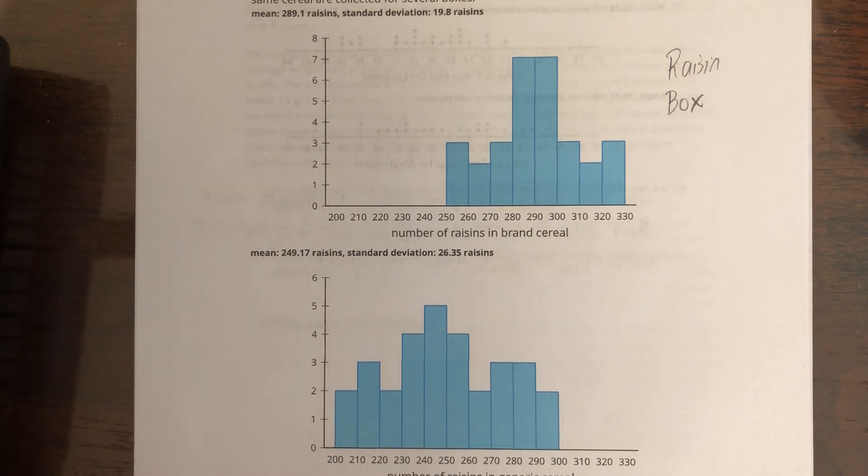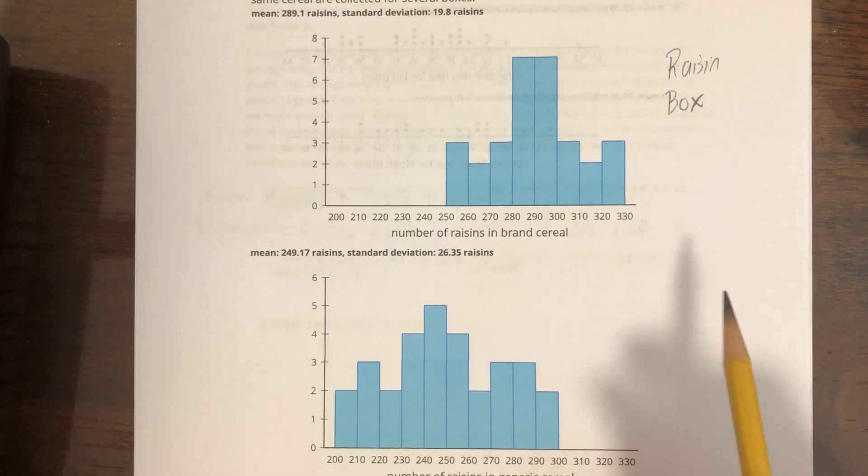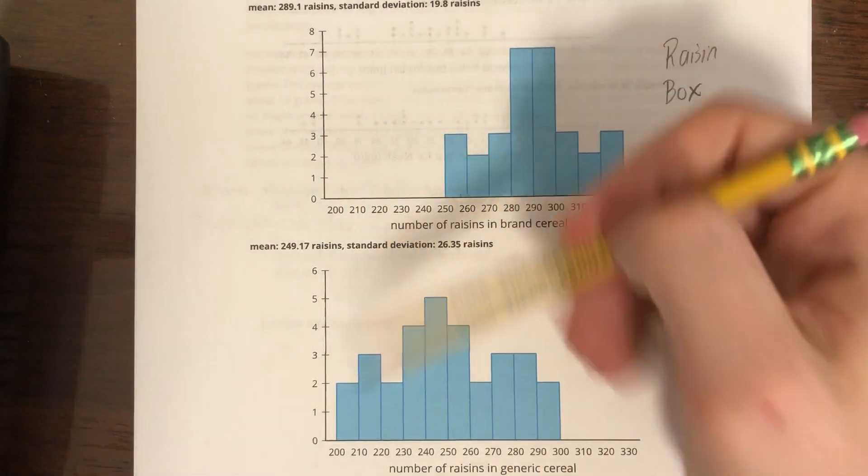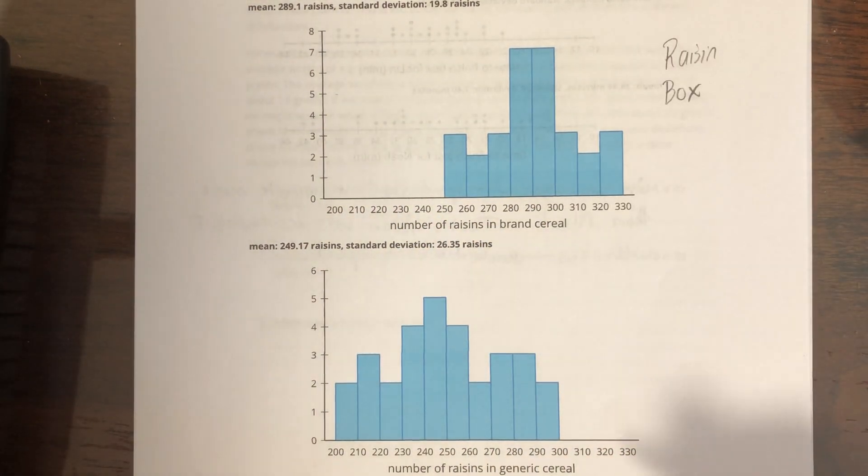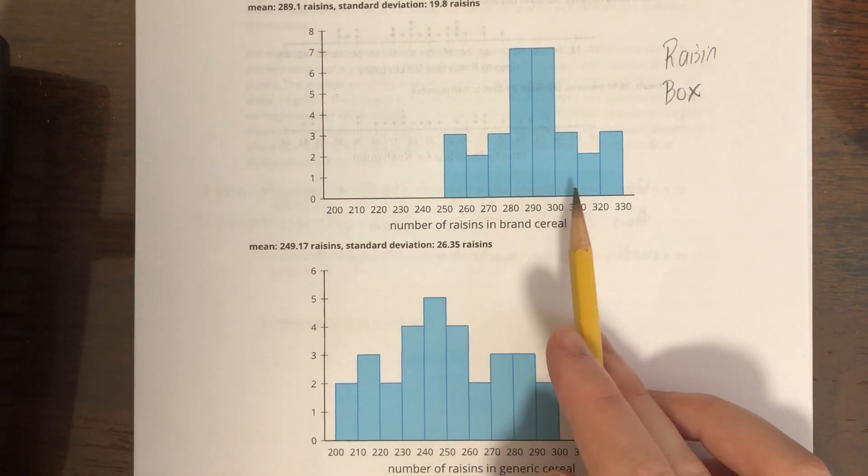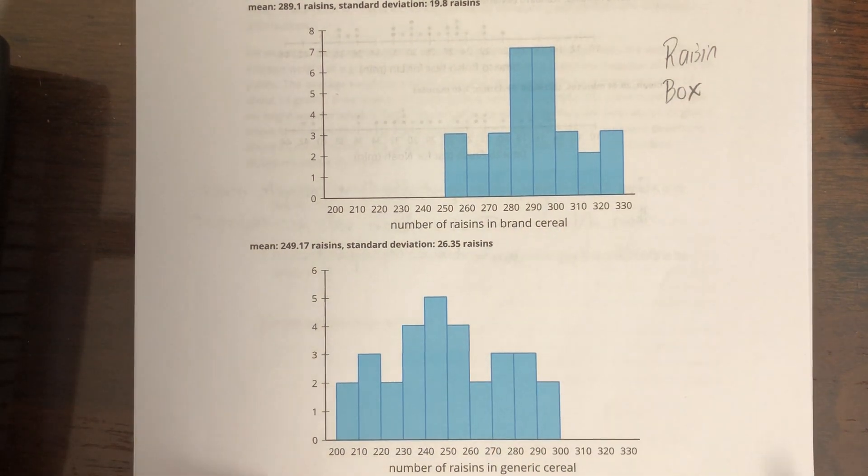So if you were making, you know, comparing two boxes of cereal, I would not use a display like this. At least make the scales the same. All right, but anyways, you should be able to tell that the average of the middle for this brand cereal on average has more raisins than generic.